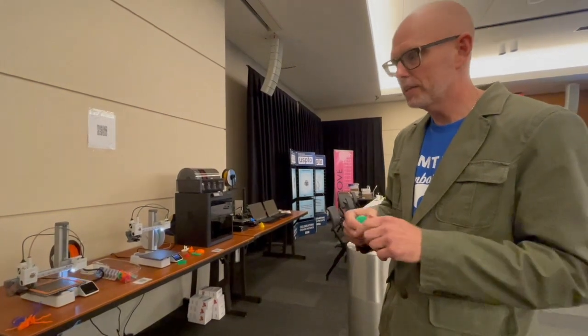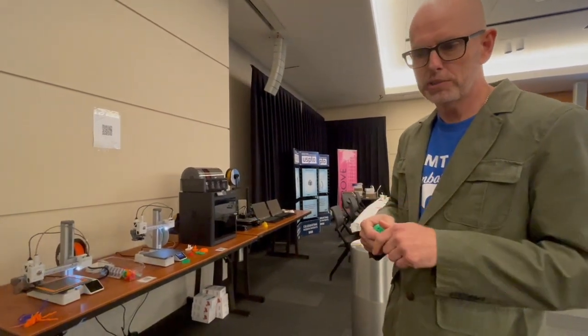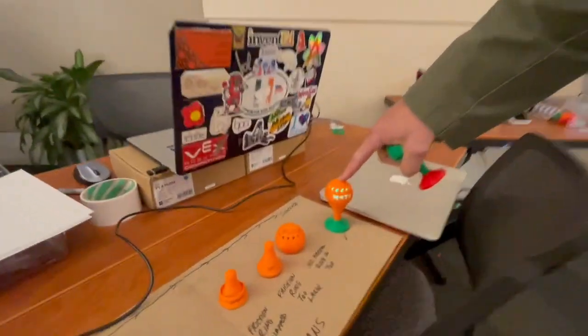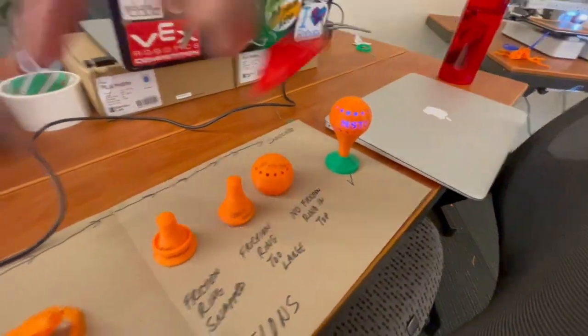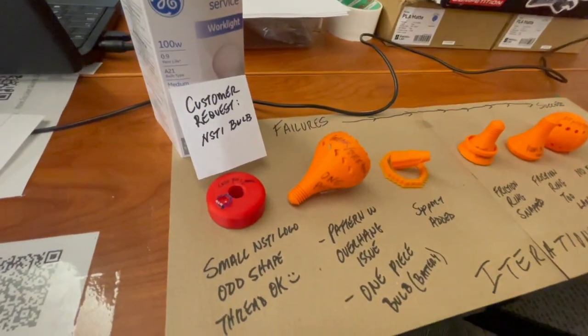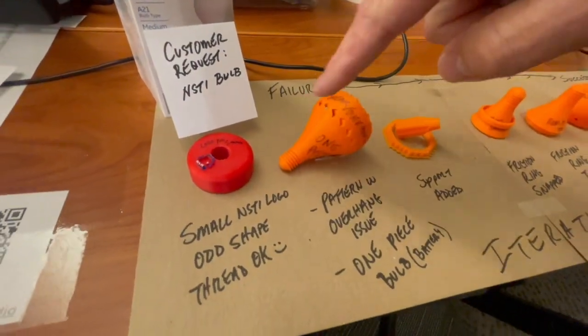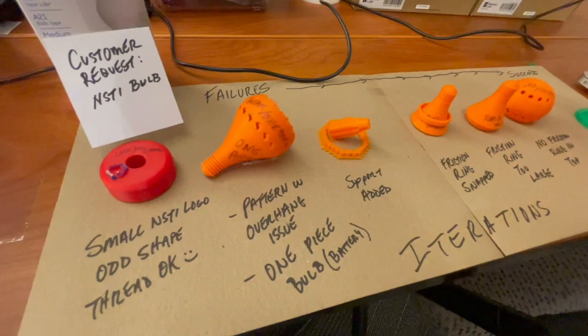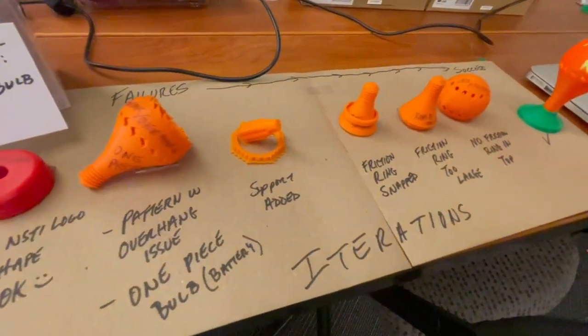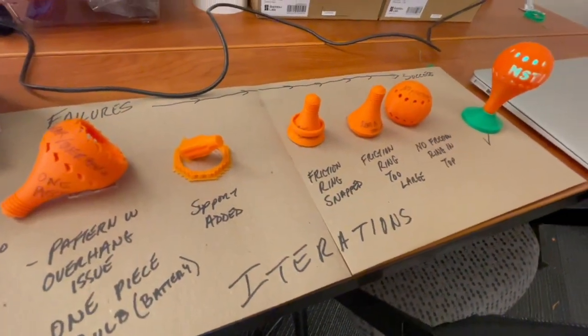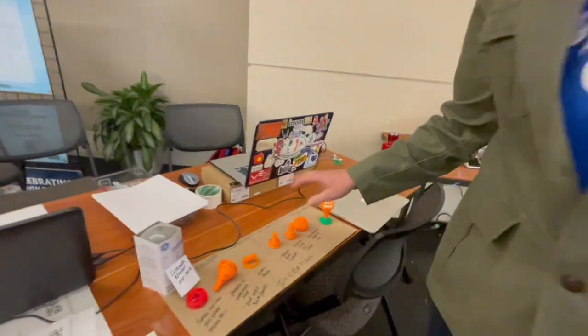And even then it takes one, two, sometimes three iterations. You can see with this product, there were several mistakes along the way. We were asked to make a light bulb that you could light up with a logo on it, and throughout that process there were several mistakes we had to go back and correct.